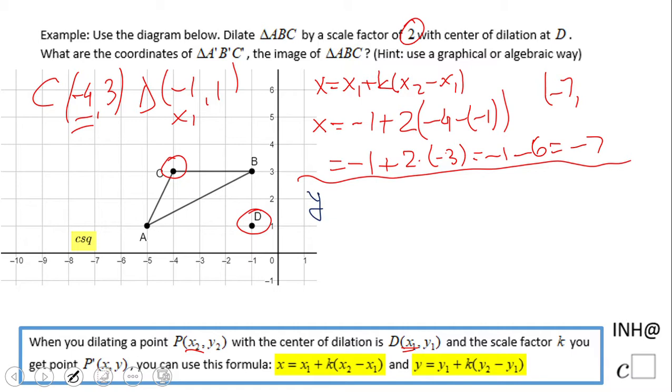The y coordinate uses a similar formula: y = y₁ + k(y₂ - y₁). y₁ is the y coordinate of the center of dilation, which is 1. The scale factor k is 2, and y₂ is